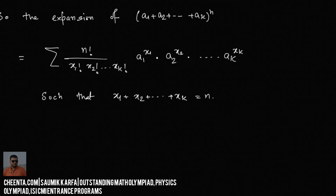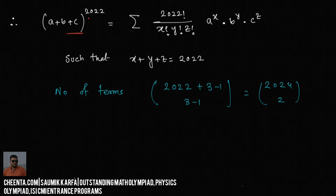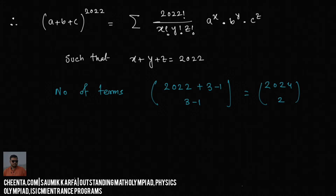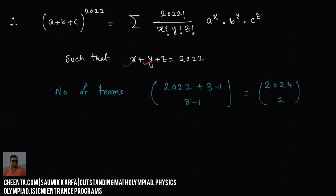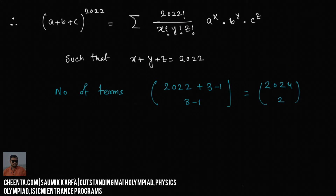Using the same idea, the expansion of (A + B + C)^2022 has terms of the form [2022! / (X! Y! Z!)] × A^X × B^Y × C^Z, where X + Y + Z = 2022. The number of terms is C(2022 + 3 - 1, 3 - 1) = C(2024, 2). So (A + B + C)^2022 has C(2024, 2) terms.